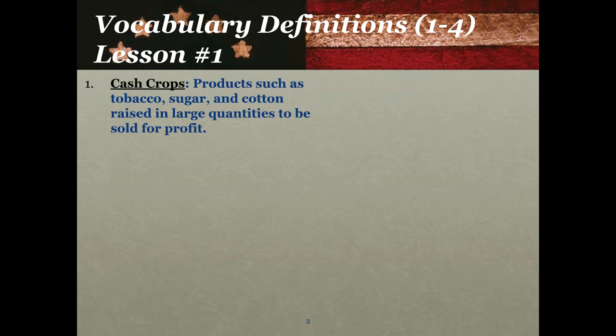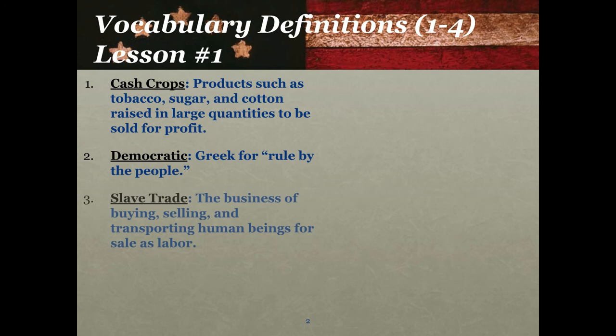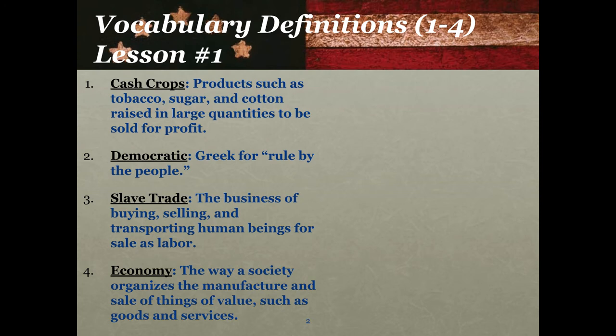The first word is cash crops — products such as tobacco, sugar, and cotton raised in large quantities to be sold for profit. Our second word is democratic, which is a Greek word meaning rule by the people. Our third word is slave trade, which is the business of buying, selling, and transporting human beings for sale as labor. And our fourth word is economy — the way a society organizes the manufacture and sale of things of value, such as goods and services.